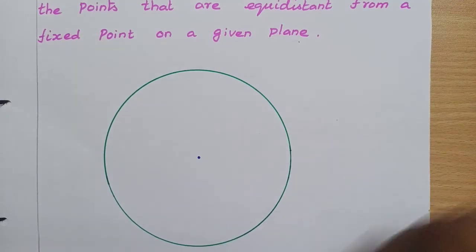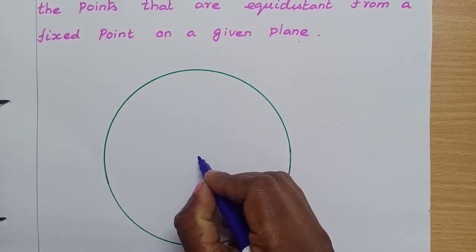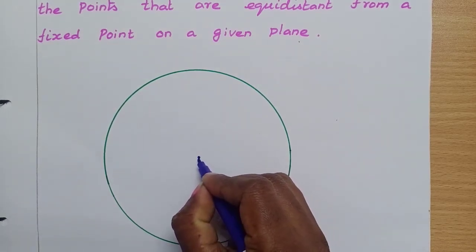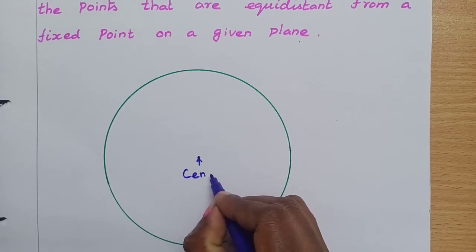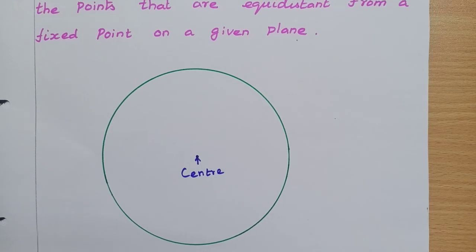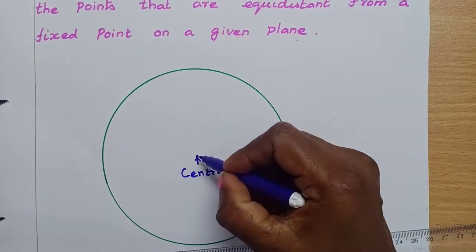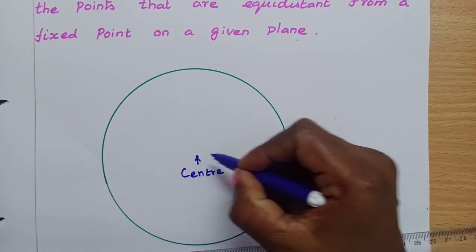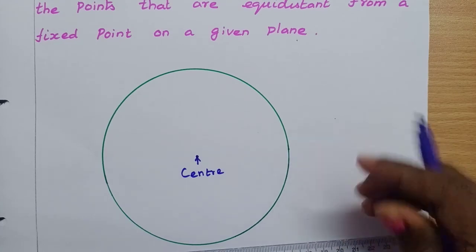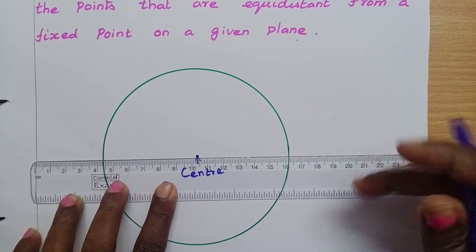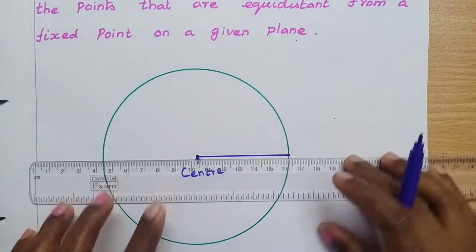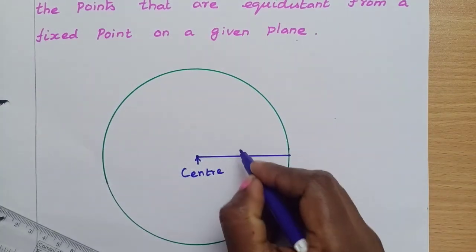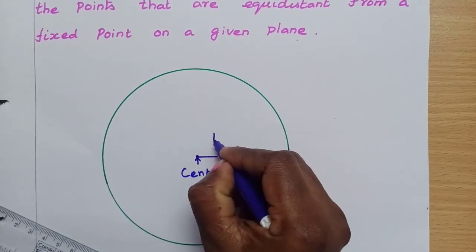So this point is called the center point. The center point, you know — and this point on the circle, the distance from the center to this point, is called the radius.